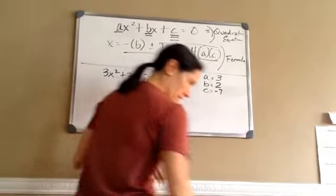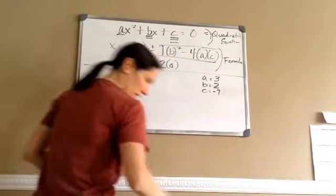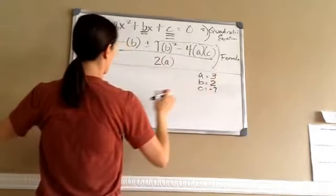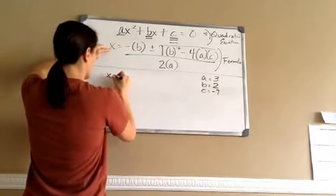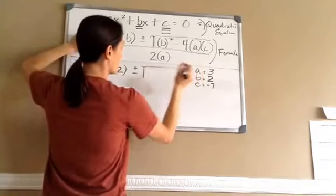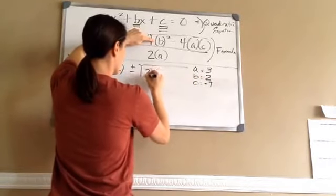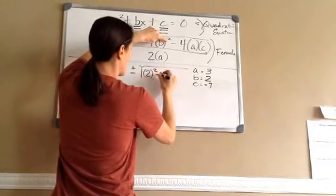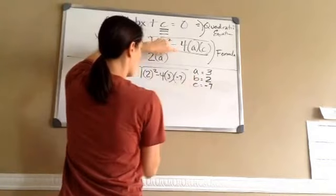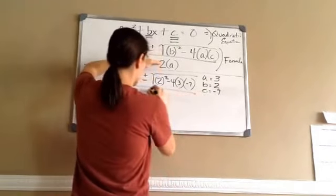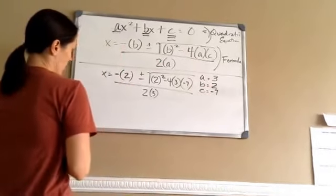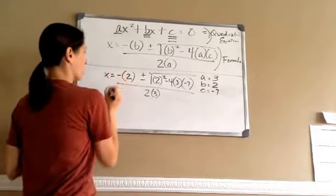Now that I know that, I'm going to use this quadratic formula with these numbers. So X equals negative — my B is a 2 — plus or minus the square root of — this time my B is a 2 — squared, minus 4, A is a 3, C is a negative 7, all over 2 times 3. You're just inserting your numbers in for A, B, C. Now we actually perform the problem.